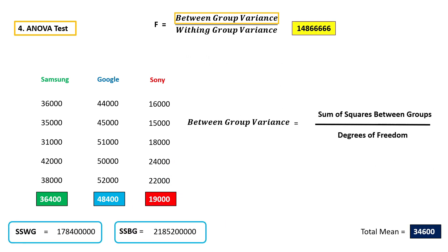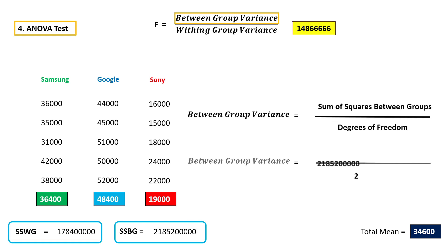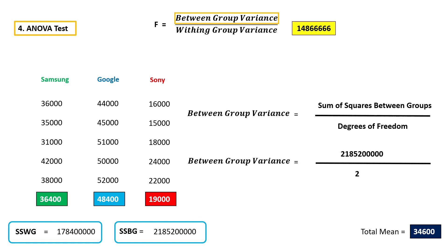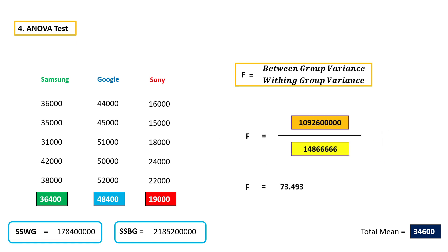To calculate between group variance, we have to divide sum of squares between groups by its degrees of freedom. For between group variance, the degrees of freedom will be number of categories minus 1. In this case we have 3 categories, so the degrees of freedom will be 3 minus 1, which is 2. If we divide sum of squares between groups by its degrees of freedom, we will get between group variance. Now we have both between group variance and within group variance, so we can simply calculate the F-score. It is 73.493.